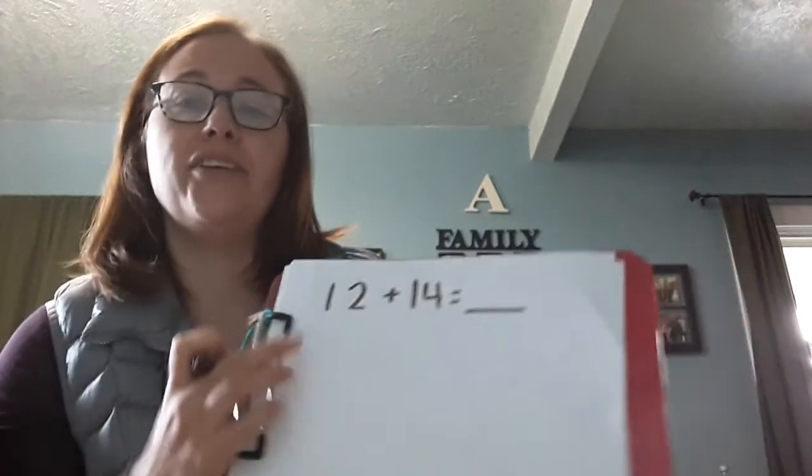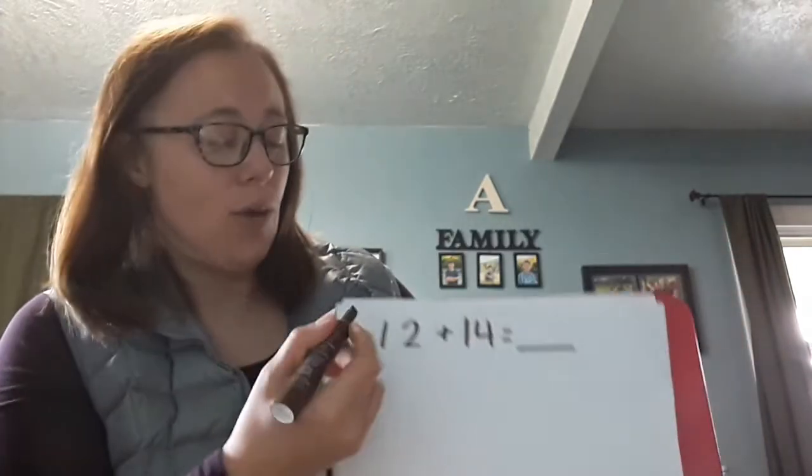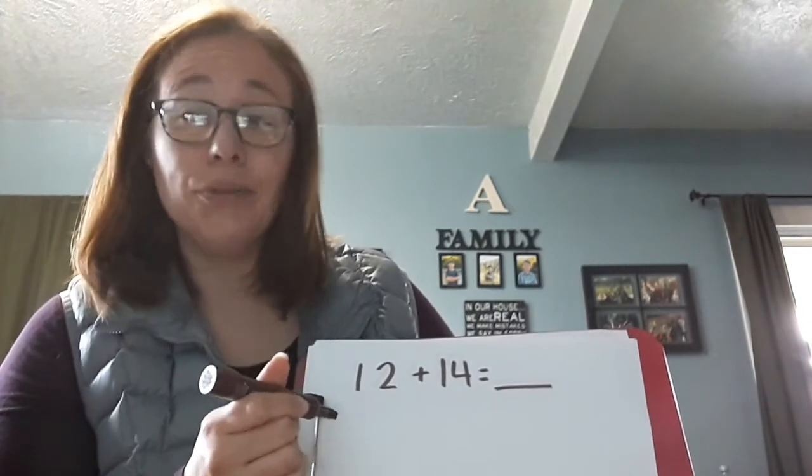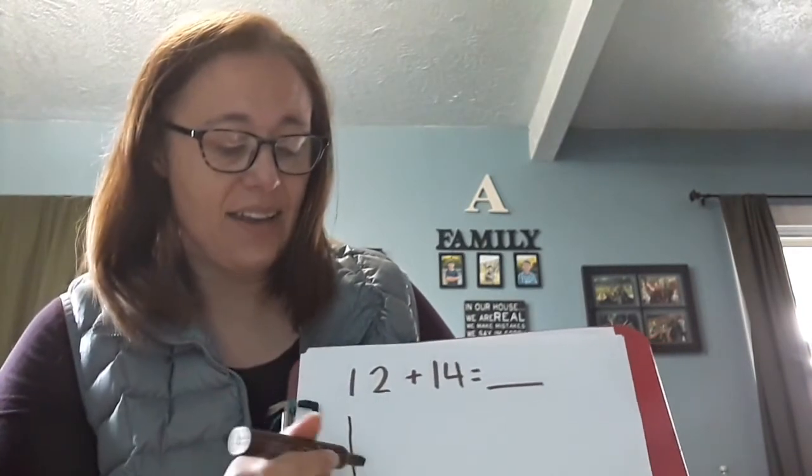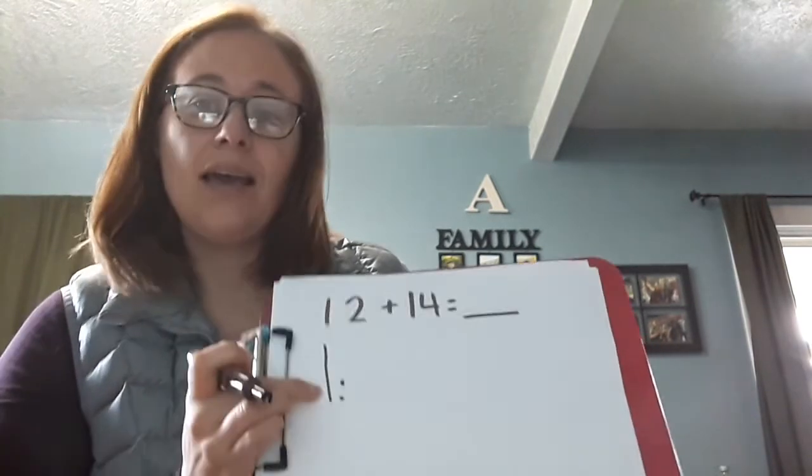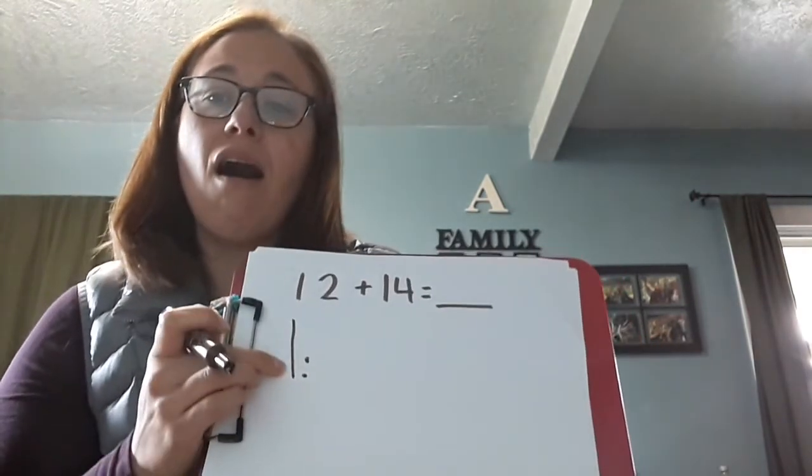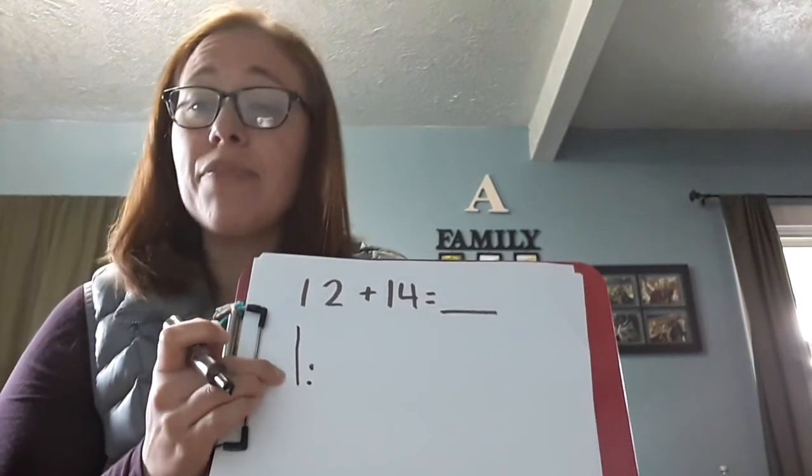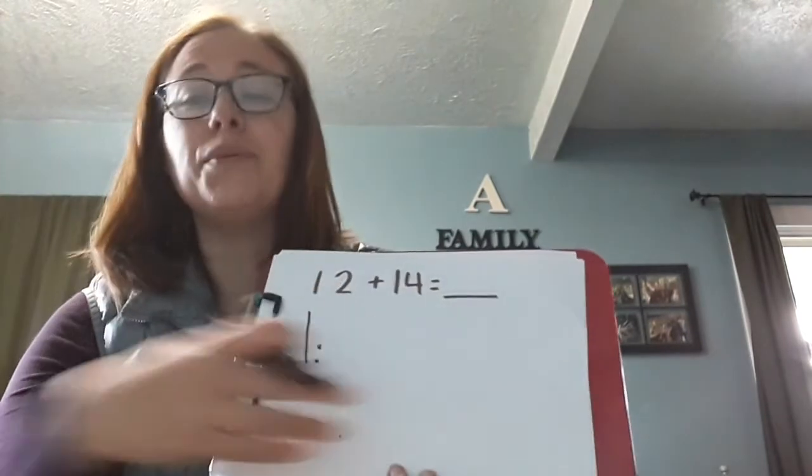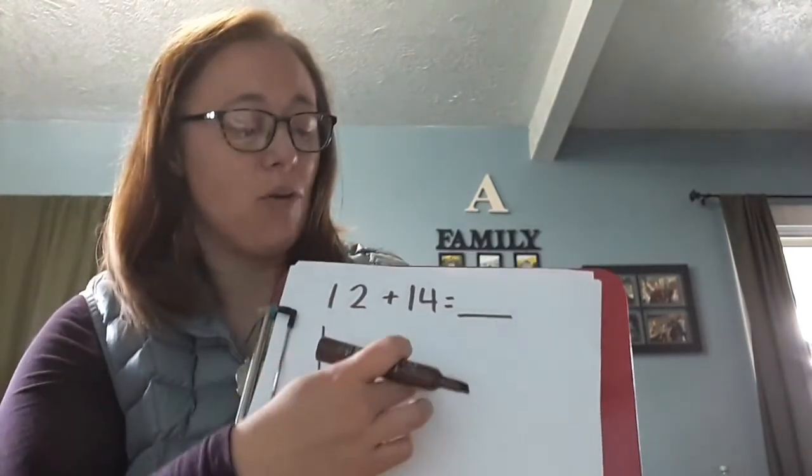Okay, so I want to show you. I have twelve plus fourteen. We'd model that by making twelve with a picture. Twelve is one stick of ten and then two ones. So we're really working on trying to solve math more efficiently. I could have made twelve dots and then made fourteen dots, but that would have taken more time. So we're working on being more efficient.